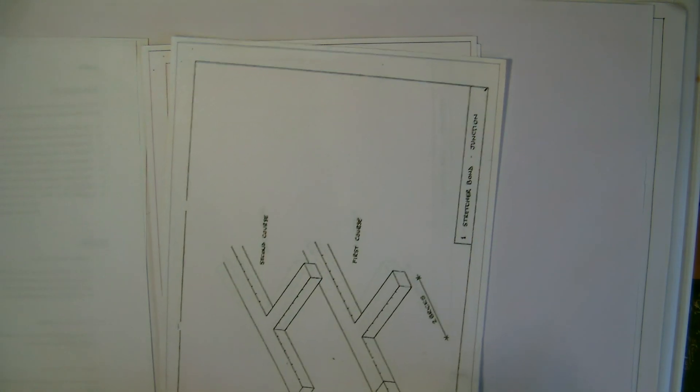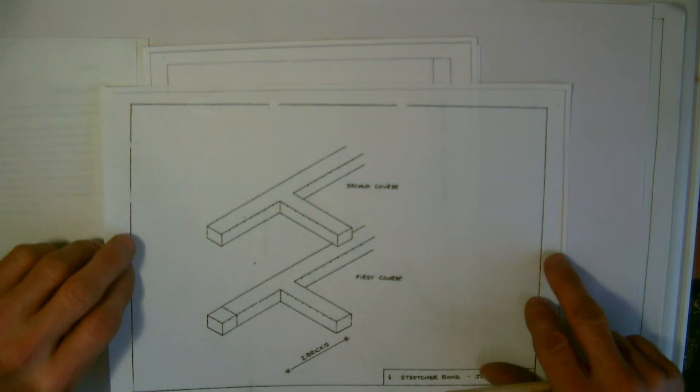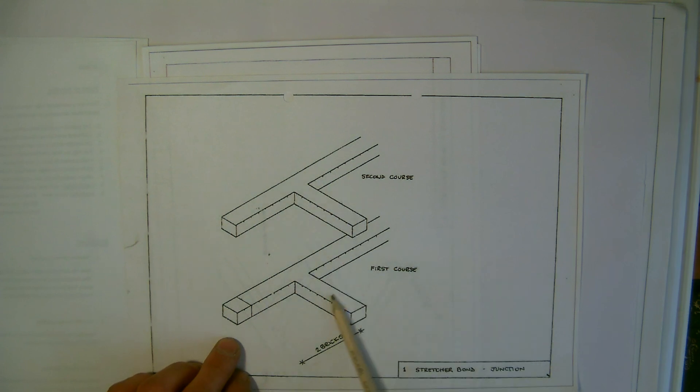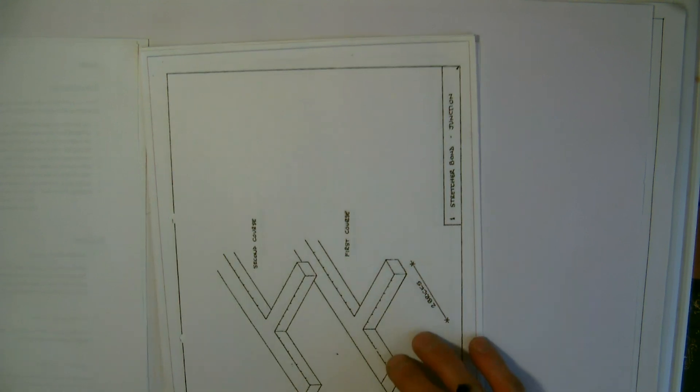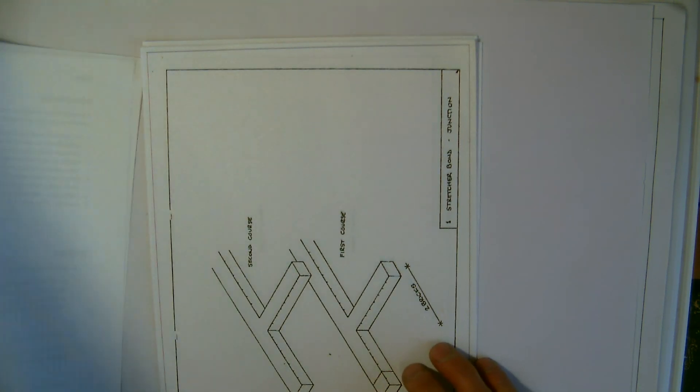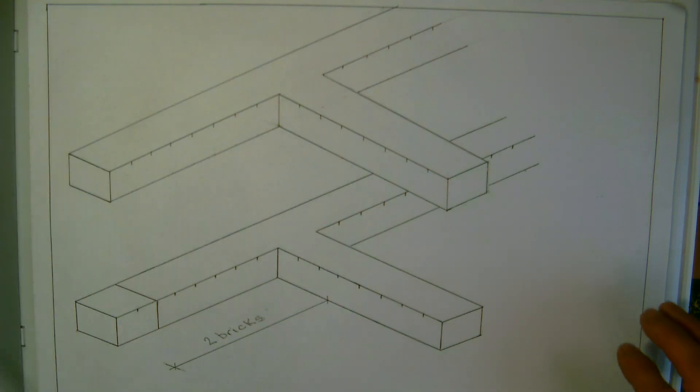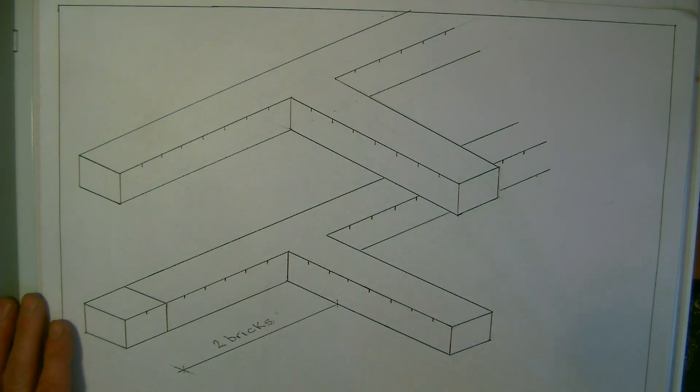We can see that we have drawn here the first and second course of a junction. Now what I have done is I have made this drawing bigger for this video because obviously working from the booklet would be a little bit difficult to explain it properly.